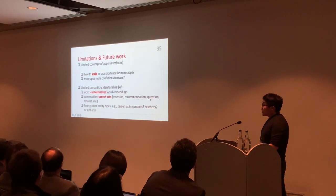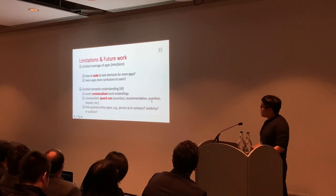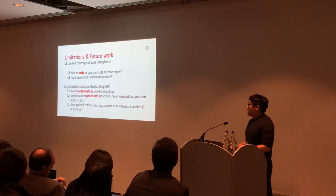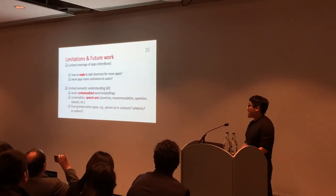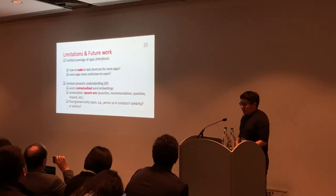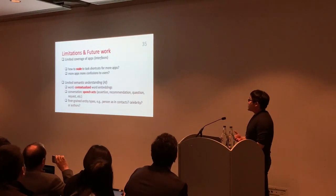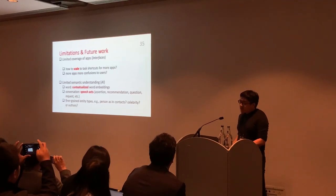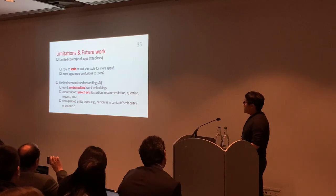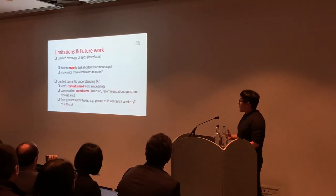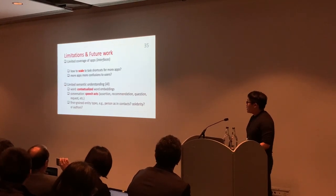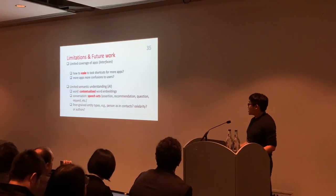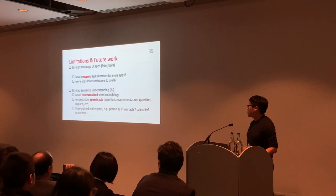One user commented that it would be good to have search functionality built in for apps with rich content, since sometimes they might want to search for something not mentioned in the conversation. There are two main limitations in our work. On the interface side, we only support five apps in our prototype, and it's unclear how to support broader app integration with minimal developer effort, or whether more apps could cause ranking confusion for users. On the semantic side, understanding can be improved with better word modeling or conversation modeling, and the entity recognizer could be linked to more specific types for better targeting of app functionality.